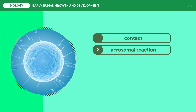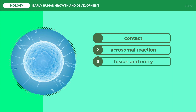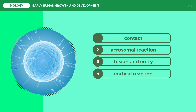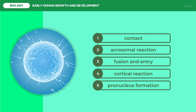After the acrosomal reaction, the plasma membranes of the egg and sperm cells fuse. The sperm nucleus enters the egg cell, leaving the rest of the sperm stuck in the zona pellucida. This is followed by the fourth step, the cortical reaction, in which cortical granules release enzymes to harden the zona pellucida, blocking other sperm cells. Finally, the nuclei of the egg and sperm fuse to form the pronuclei — the egg is now completely fertilized.